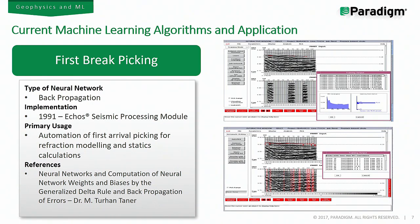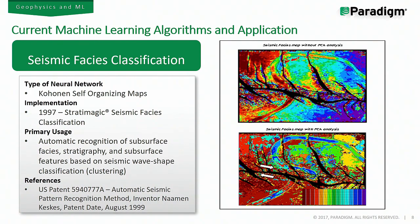In 1991, we were using the backpropagation neural network where we compute the weights and biases by something called a generalized delta rule — that's still very popular today. We backpropagate the errors to minimize the difference between the actual outputs and the desired outputs. This was a very popular application, still in use today, and it lends itself to automatic picking of any type of arrival data.